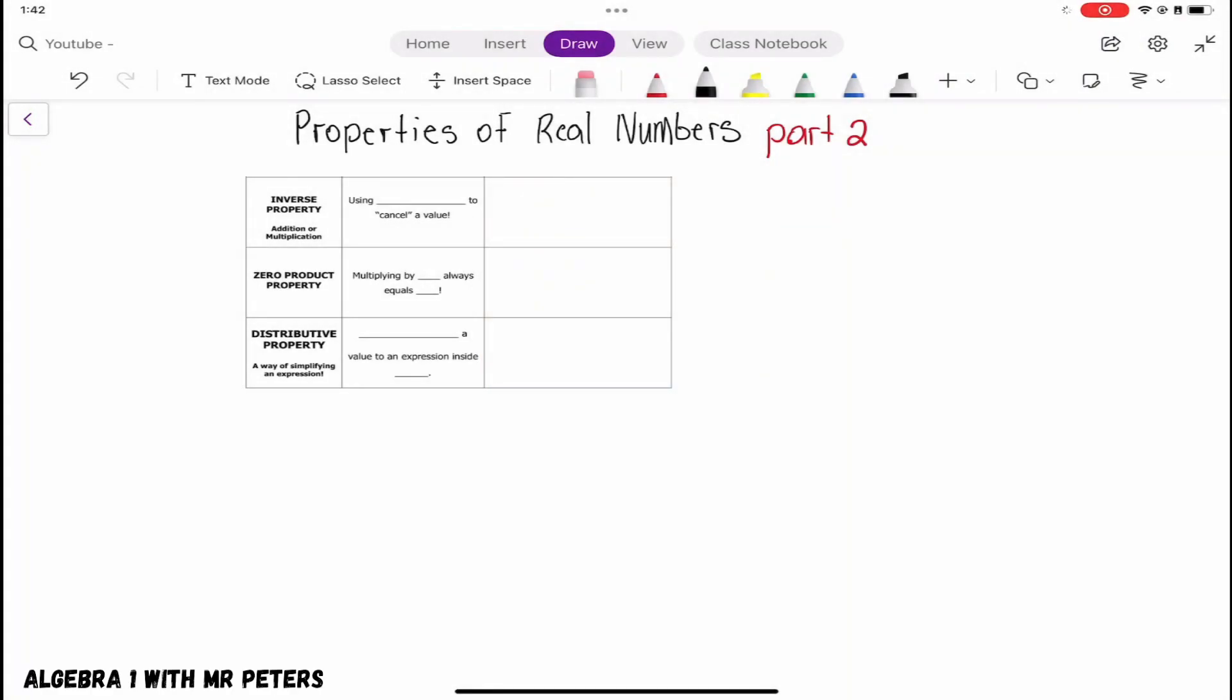What's good everybody, this is Algebra 1 with Mr. Peters. Today we're going to be talking about properties of real numbers part 2. We're going to discuss the inverse property, zero product property, and my absolute favorite, the distributive property.